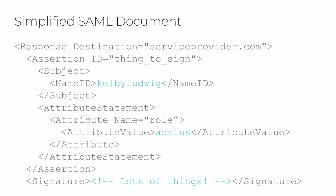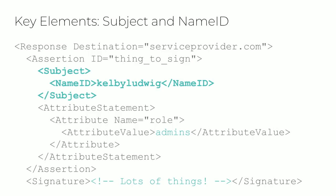SAML documents are XML, and this is a simplified example with a lot of fluff removed. The first key element is the subject and the name ID. A subject element conveys information about the authenticating user; the name ID is part of the subject element and is defined as a string value that uniquely identifies the user — commonly an email address or username. Service providers very often use the name ID to identify which user they want to authenticate to their service.